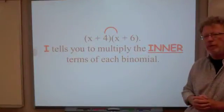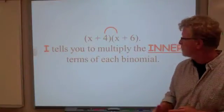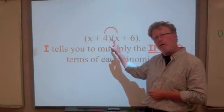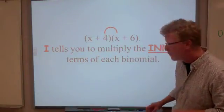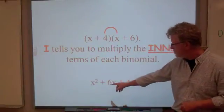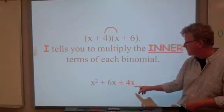I tells us to multiply the inner terms, and the inner terms are the ones that are on the inside closest to one another. So that would be the 4 times x, and, of course, 4 times x is simply 4x. And now our equation is building on out. x squared plus 6x plus 4x. We just have one more term.